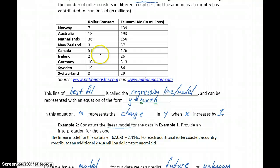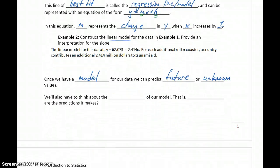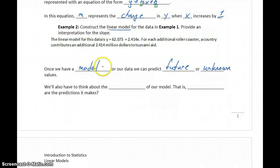So what if a different country were to have 75 roller coasters, or only 22? So that's information that we don't have in our data table, but we could use our model to predict some of those unknown values.